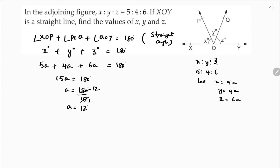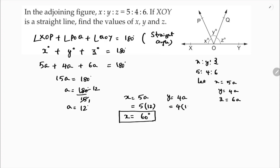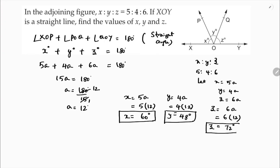Now we find the values of x, y, and z. X is 5 times a, so 5 times 12, which equals 60 degrees. Y is 4 times a, so 4 times 12, which equals 48 degrees. Z is 6 times a, so 6 times 12, which equals 72 degrees.